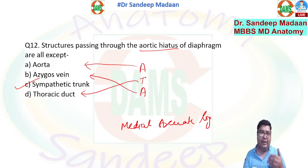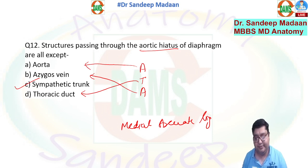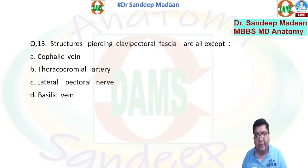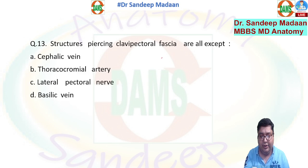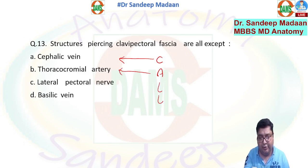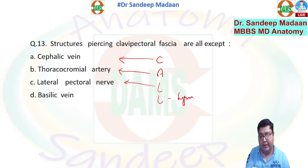Behind the medial arcuate ligament passes the sympathetic trunk, and behind the lateral arcuate ligament pass the subcostal nerve and vessels. The next question: structures piercing the clavipectoral fascia — all except which? Use the mnemonic CALL: C for cephalic vein, A for acromiothoracic artery, L for lateral pectoral nerve, and L for lymphatics.